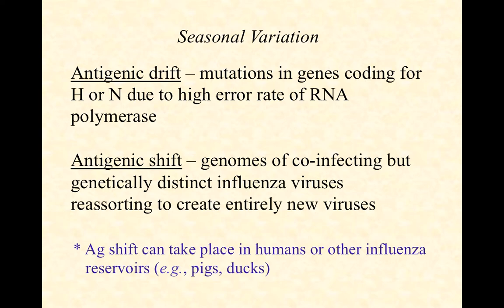Under some conditions, reassortment produces an entirely new virus that may be more or potentially less virulent. For example, a strain that transmits aggressively between people but causes mild disease could co-infect a cell with a strain that doesn't transfer well between people but causes highly virulent disease — creating a new variant with the worst properties of both: highly contagious and highly virulent. Antigenic shift can also take place in other reservoirs, primarily pigs and water birds like geese and ducks.